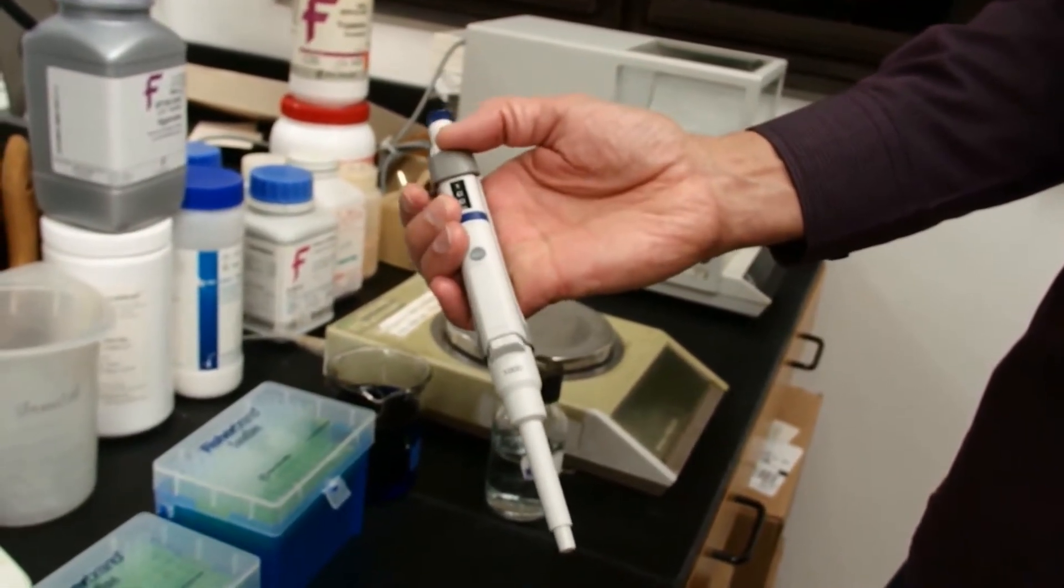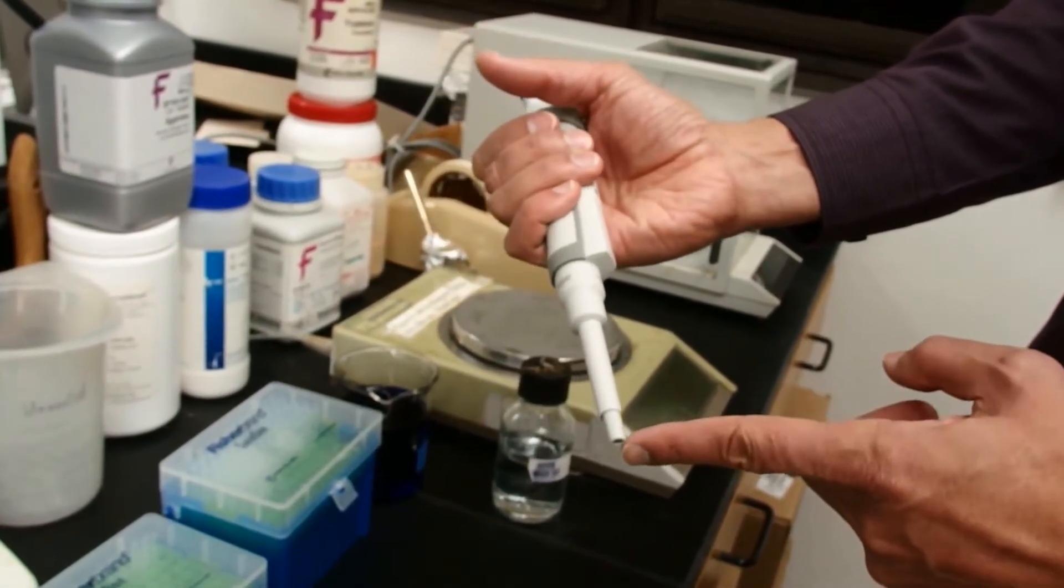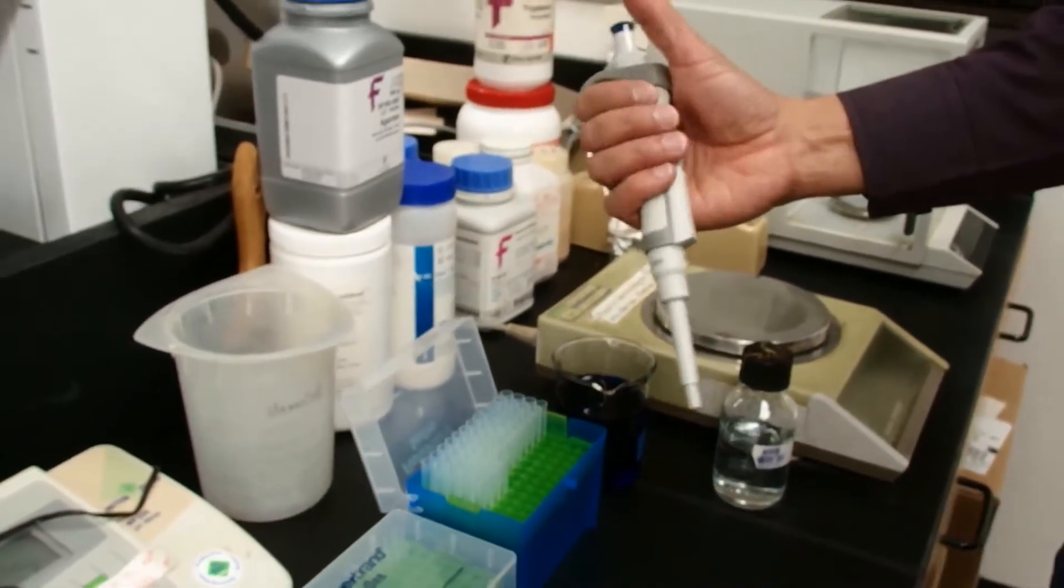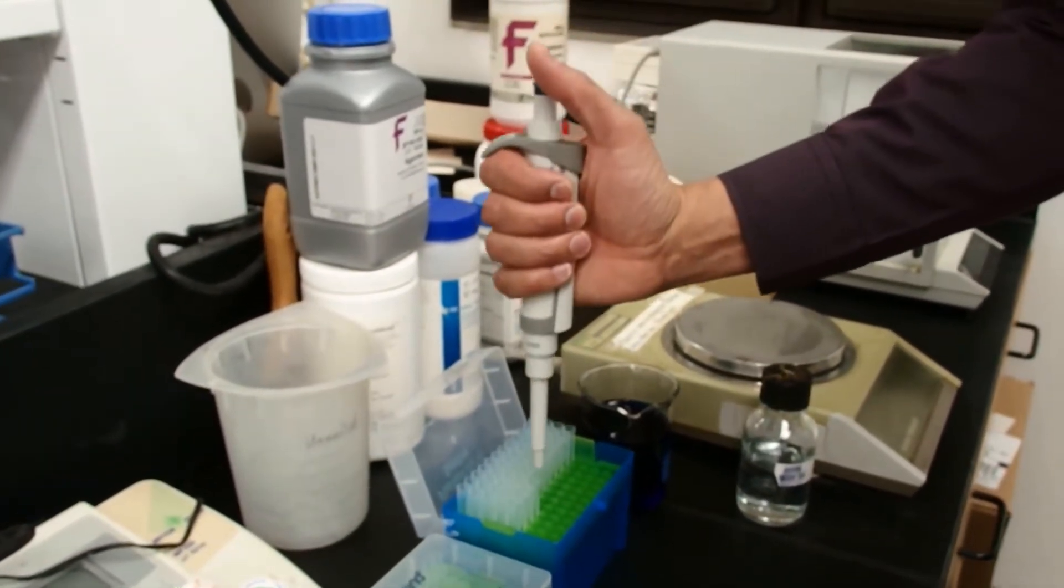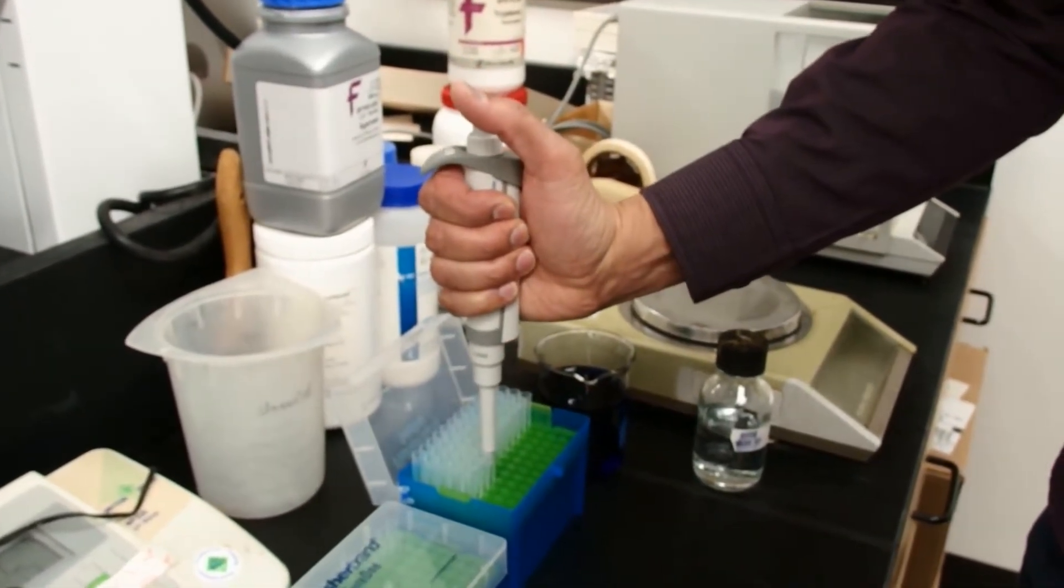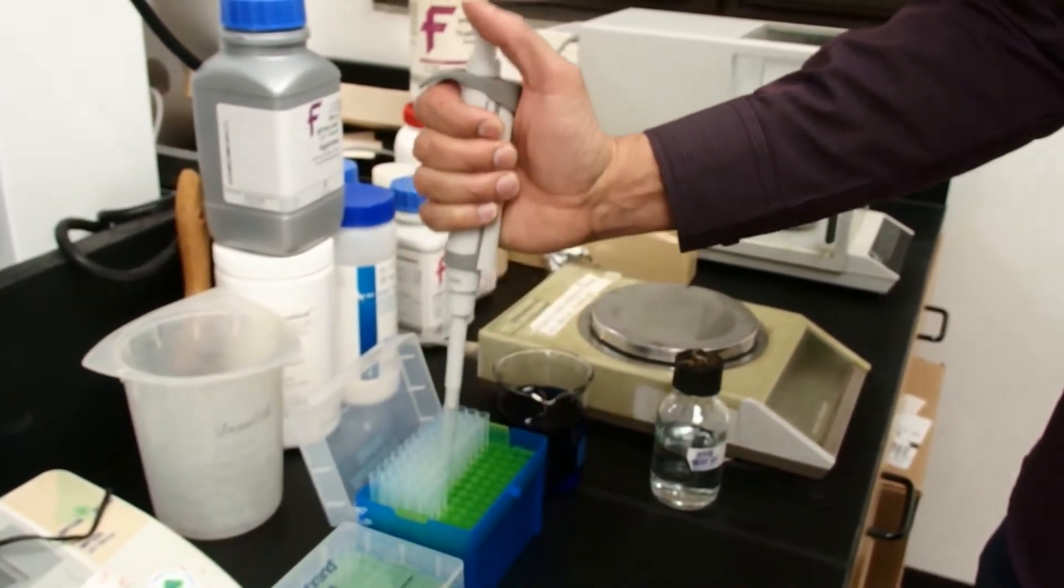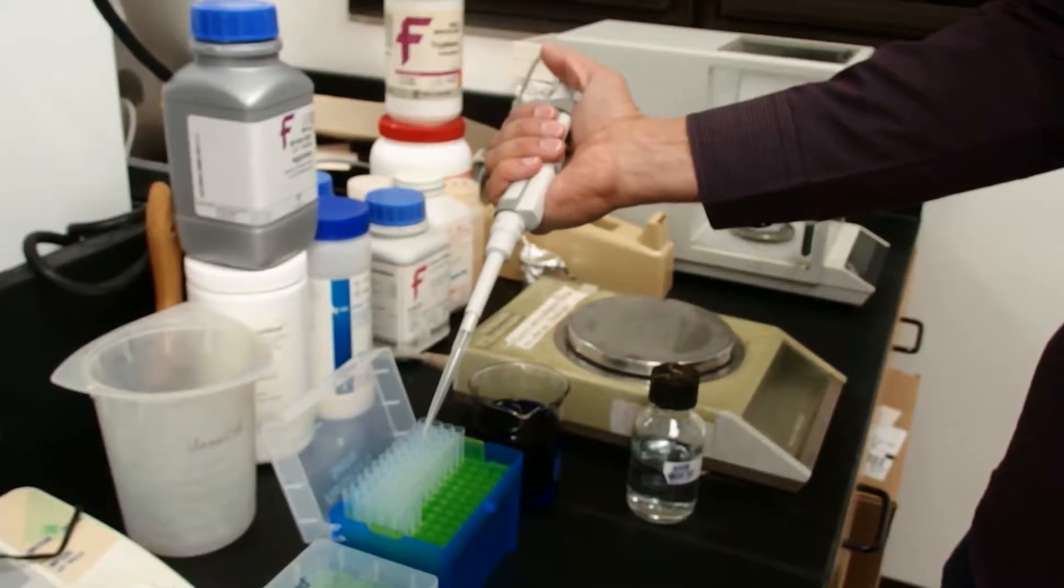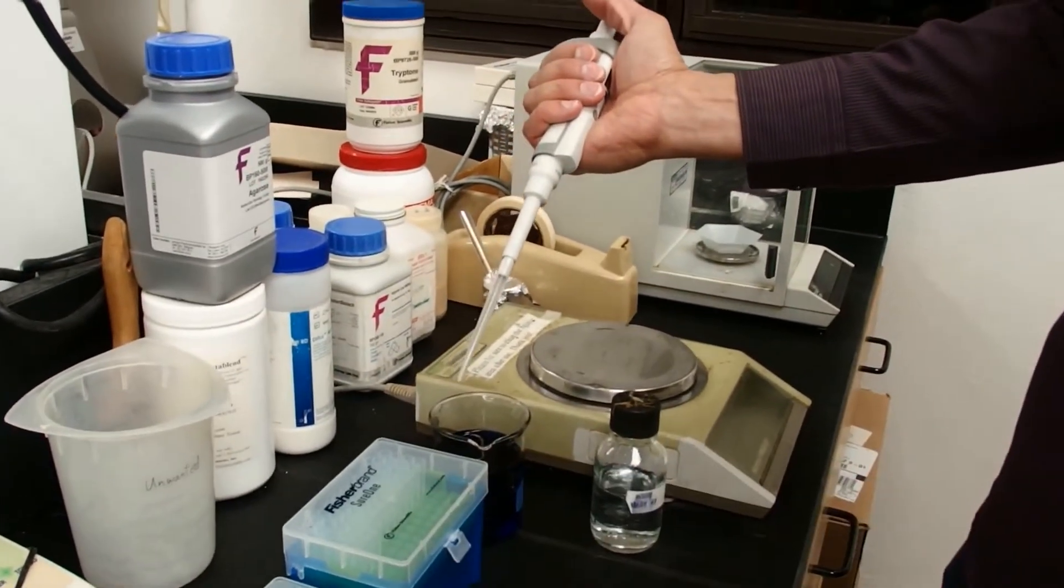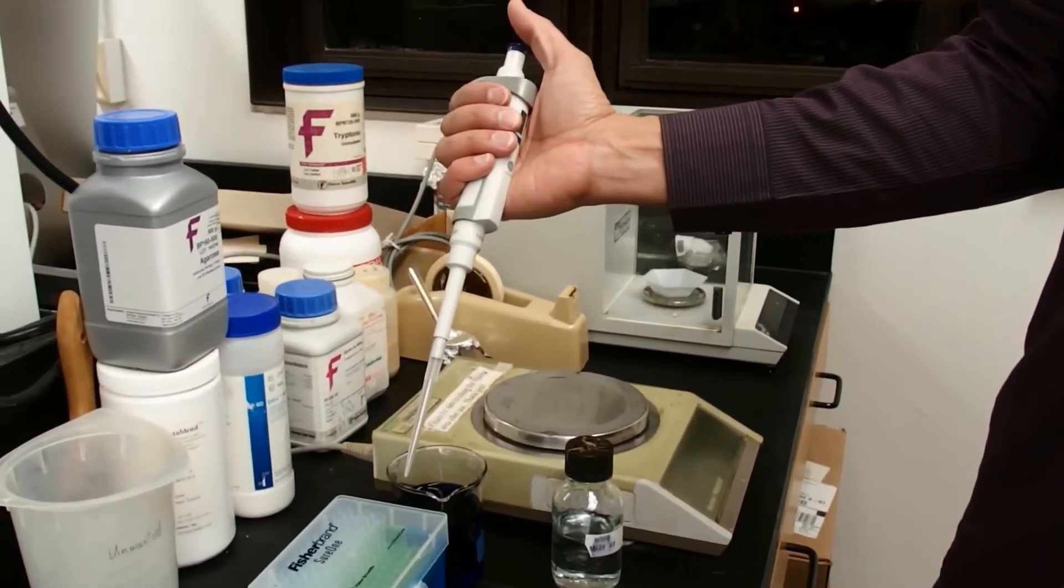It also has this part here that allows us to eject the tip. The tips go on here. They each have their own tips. We should press firmly, but not so firm that you break the plastic. The objective here is to get an airtight seal so that the tip doesn't leak. Pipette boxes should be closed when not used so that dust doesn't fall into these very clean tips.